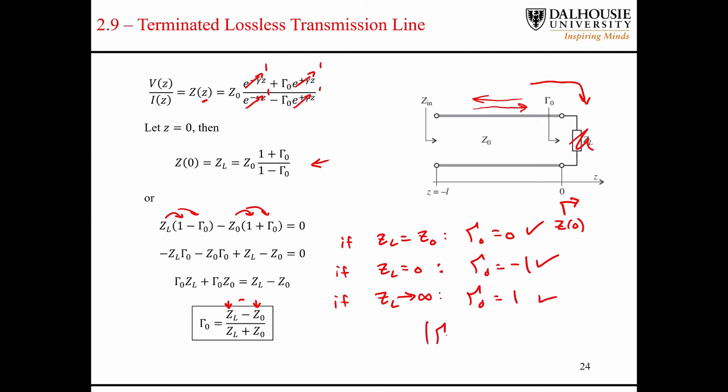When the magnitude of the reflection coefficient equals one, which represents one of these two situations, that means that we have 100% reflection. When the reflection coefficient is zero, then essentially we have 100% insertion or 0% reflection.